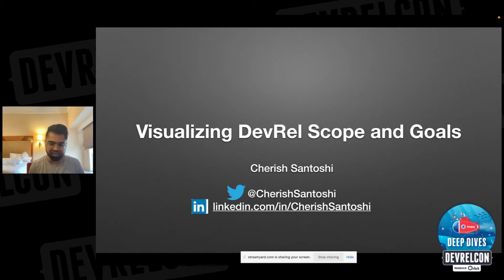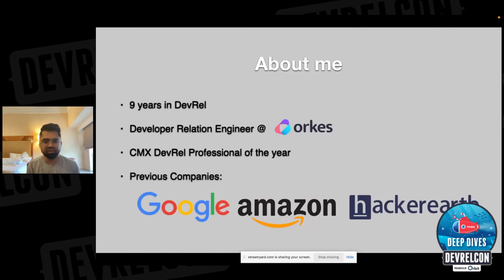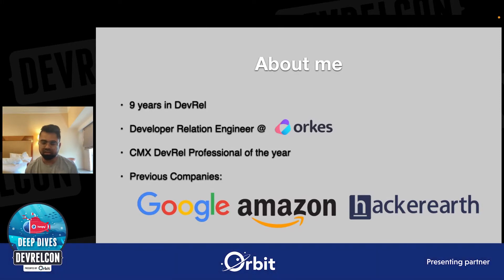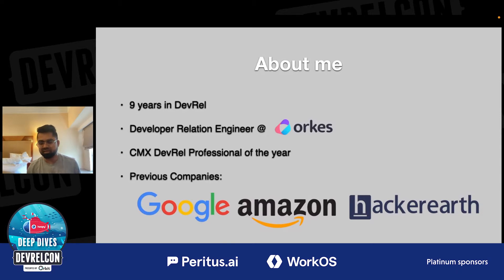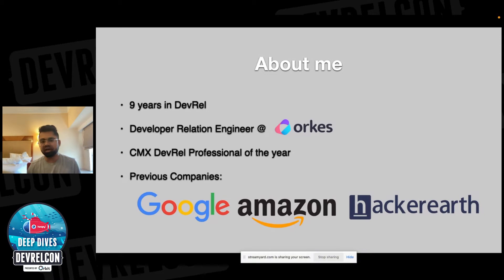I've worked with bigger companies and smaller companies, so I want to talk about this to understand that no matter which company you're working with, it still holds some relevance wherever you are. I'll start with a little bit about myself. I've spent nine years in DevRel now. I'm currently a developer relations engineer at AUKUS, which is a cloud-based offering on Netflix Conductor — the founding engineers all came out of Netflix. This year, I won the CMX developer relations professional of the year award, so thanks to everybody who voted for me. Previous companies I've worked with are Google, Amazon, Accurus, and a few other startups.